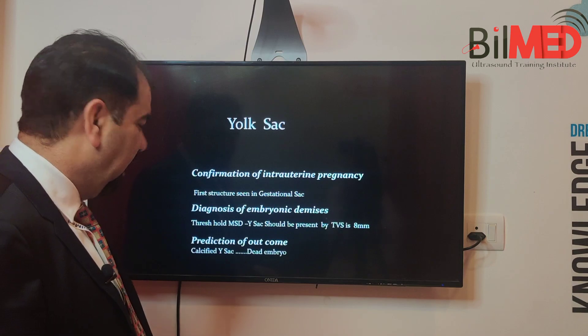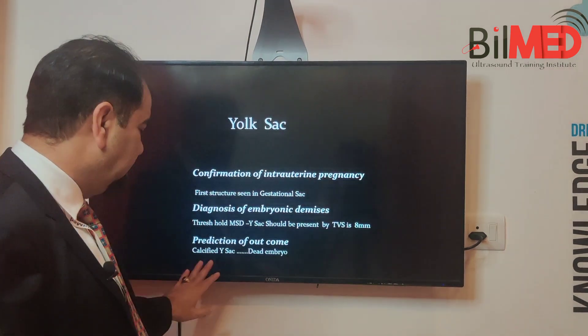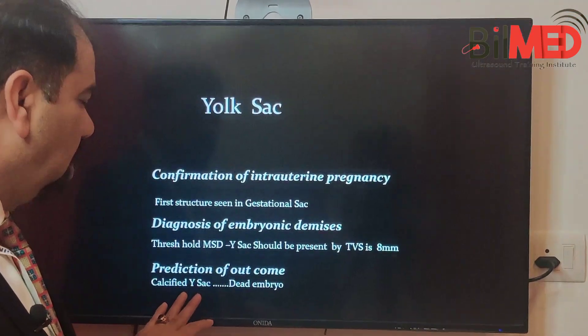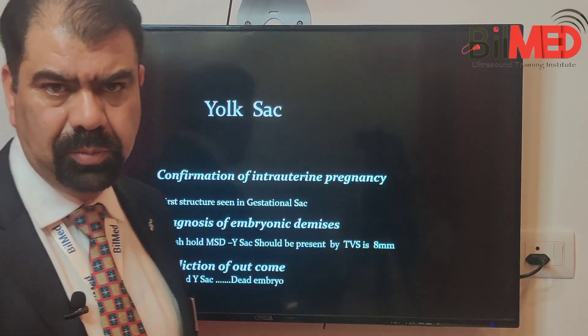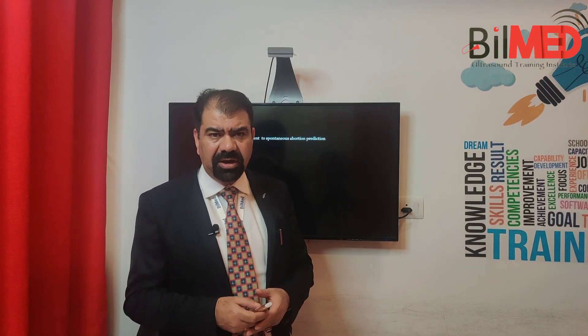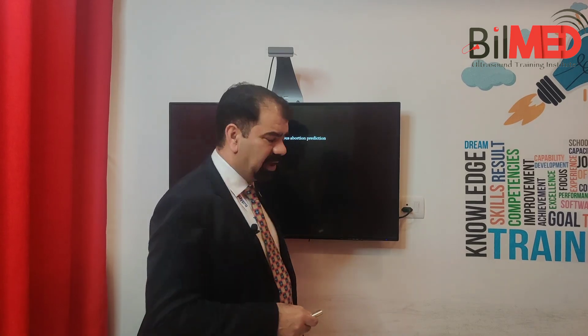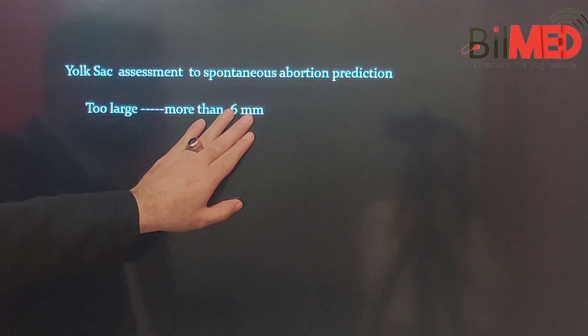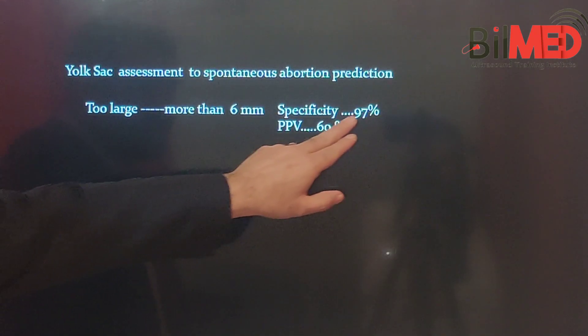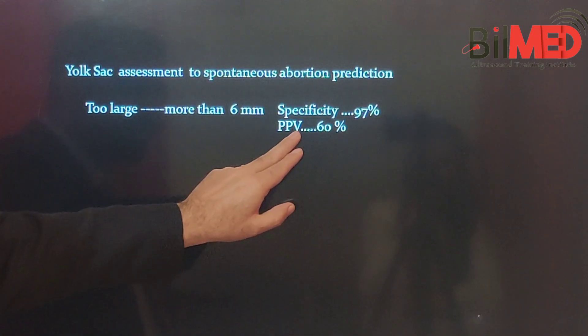The yolk sac predicts the outcome of the pregnancy. A calcified yolk sac means you are almost 100% dealing with a dead embryo. Make a habit of scanning the yolk sac carefully — most of us are not giving sufficient time to it. A yolk sac greater than six millimeters is abnormal, with a specificity of 97% and a positive predictive value of 40% for spontaneous abortion prediction.